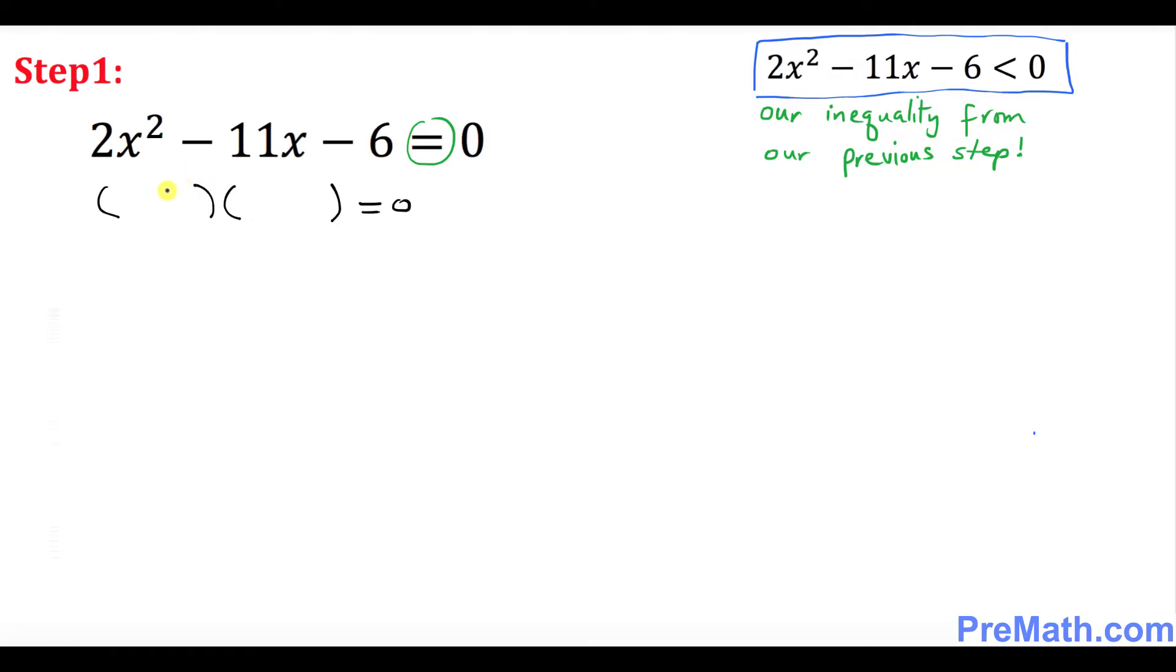So what we're going to have is (2x + 1) and over here is going to be (x - 6). These are our factors. Now we're going to split them up. So 2x + 1 = 0 and here x - 6 = 0.